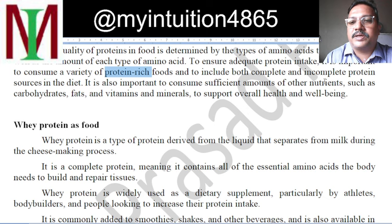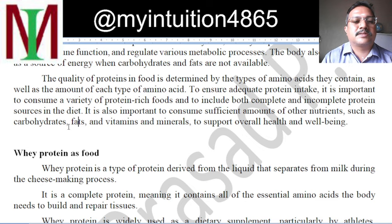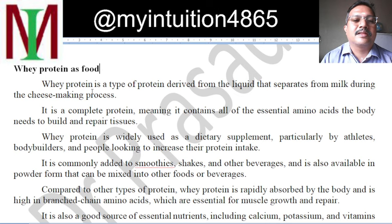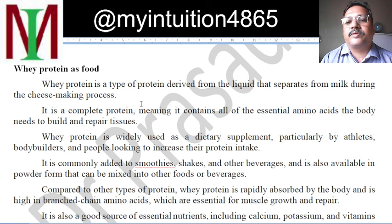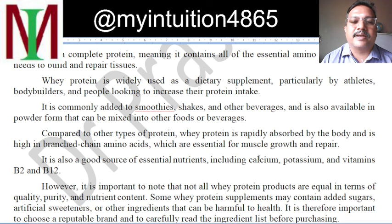Protein sources can be complete or incomplete. For vegetarians mainly — because non-vegetarians get almost the complete protein they require from the food they eat — vegetarians may not get complete protein. Therefore, to supply that, new things are produced like whey protein. Whey protein is a type of protein derived from the liquid that separates from milk during the cheese-making process. It is a complete protein — all the essential amino acids required by our body are present in it.